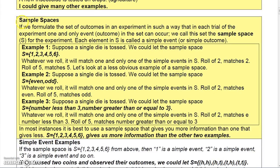Sample spaces are basically the set of all possible outcomes in an experiment. For example, if you rolled a single die, the sample space would be one, two, three, four, five, six. This is not the only way you could set up the sample space, but it's generally the most popular. Whatever we roll, it will match one and only one of those simple events. These are called simple events — there are six simple events here, one through six. If you roll a two, it matches a two; if you roll a five, it matches a five.